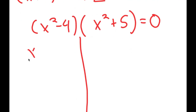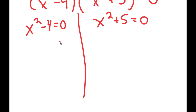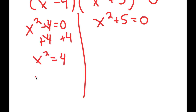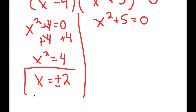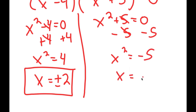This gives two equations: x squared minus 4 equals 0, and x squared plus 5 equals 0. For x squared minus 4 equals 0, adding 4 on both sides gives x squared equals 4, so x equals positive or negative 2. For x squared plus 5 equals 0, x squared equals negative 5, so x equals positive or negative the square root of negative 5, which equals positive or negative i times the square root of 5.